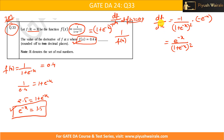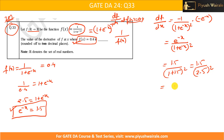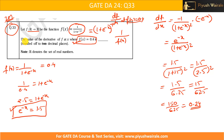Now substituting e^(-x) = 1.5 into the derivative: df/dx = 1.5 / (1 + 1.5)^2 = 1.5 / (2.5)^2 = 1.5 / 6.25. That gives us 15/62.5 or 150/625, which equals 0.24. So the answer is 0.24.